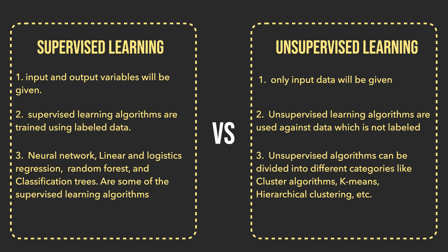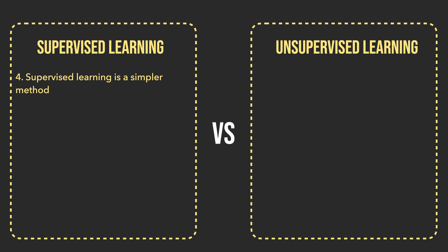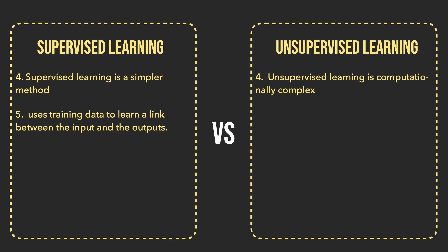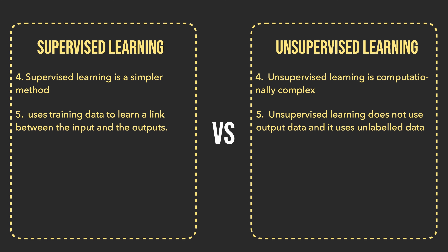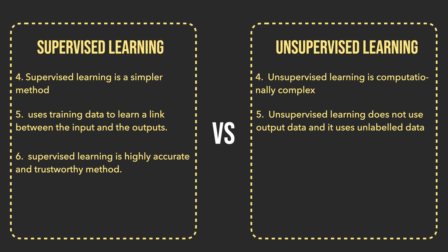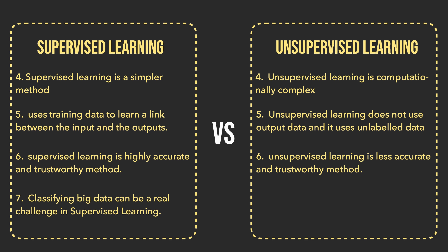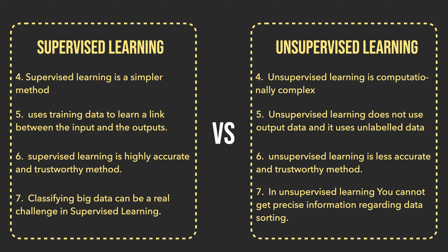Unsupervised learning algorithms can be divided into different categories like cluster algorithms, k-means, hierarchical clustering, etc. When it comes to computational complexity, supervised learning is a simpler method, where unsupervised learning is computationally complex. Supervised learning model uses training data to learn a link between the input and the outputs, while unsupervised learning does not use output data and uses unlabeled data. Supervised learning is a highly accurate and trustworthy method, whereas unsupervised learning is less accurate and trustworthy. When it comes to drawbacks, classifying big data can be a real challenge in supervised learning, where in unsupervised learning, you cannot get precise information regarding data sorting.